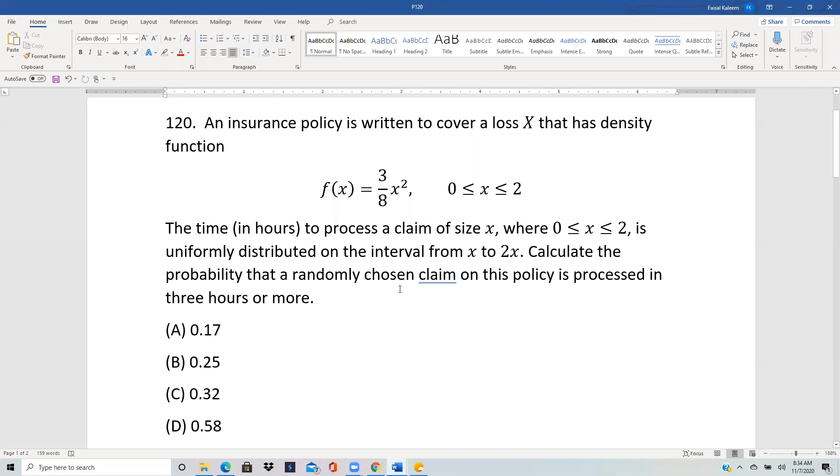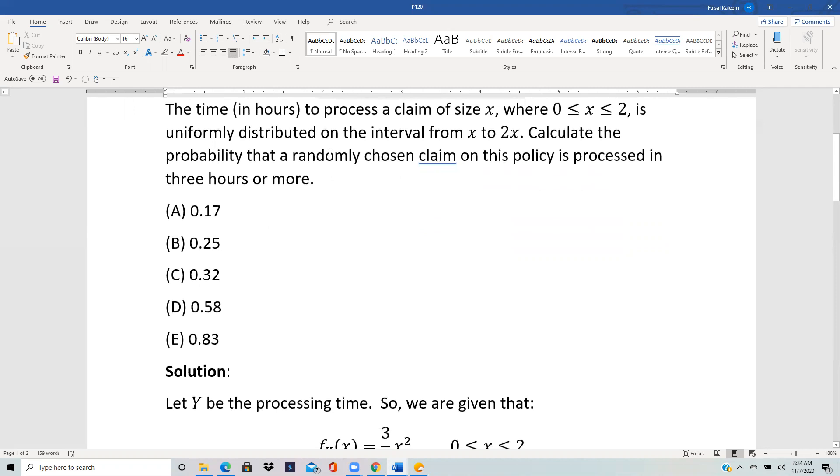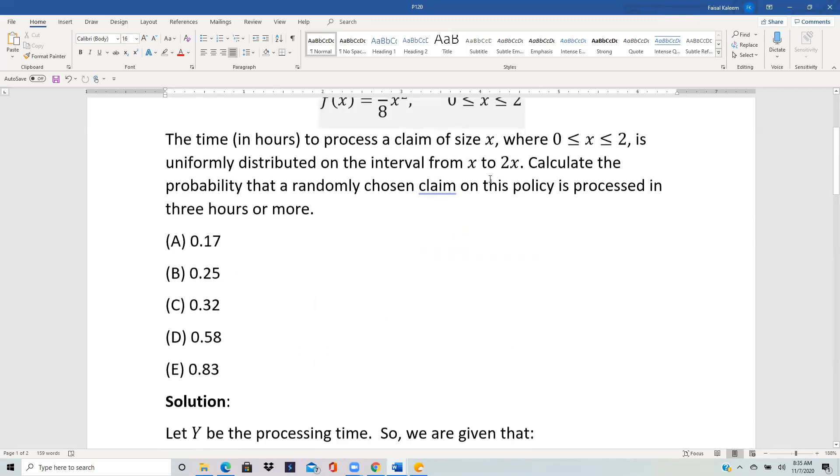So let the processing time be Y. In a joint pdf situation, when you are given just the pdf of one of the variables, like f of x over here, that's the same thing which we sometimes also write as f subscript big X of x. Usually this subscript is omitted if you are dealing with only one variable, but if you're dealing with two variables then sometimes you have to write it to make sure which variable you are talking about.